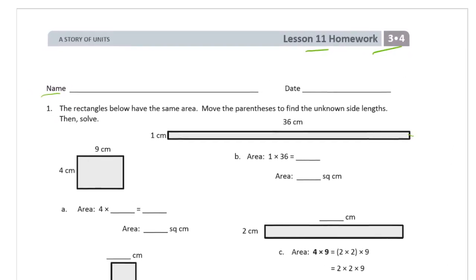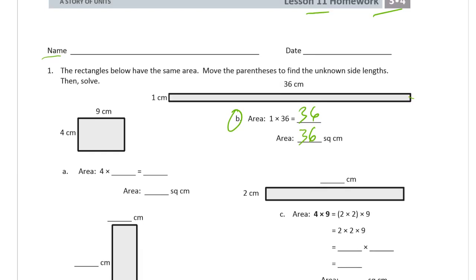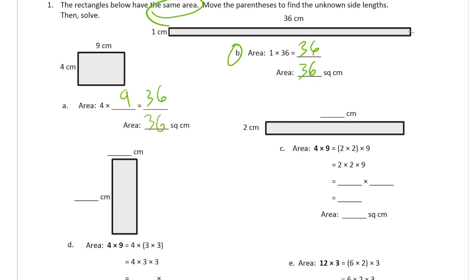The easiest one to figure out the area from is the 1 by 36 rectangle, which is B at the top. 1 times 36 is 36, so the area is 36 square centimeters. We know all of these have the same area, so they all have products of 36. This one is 4 times 9, and this one is 2 times something.